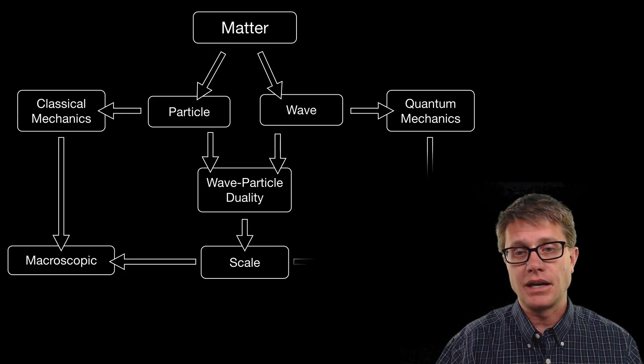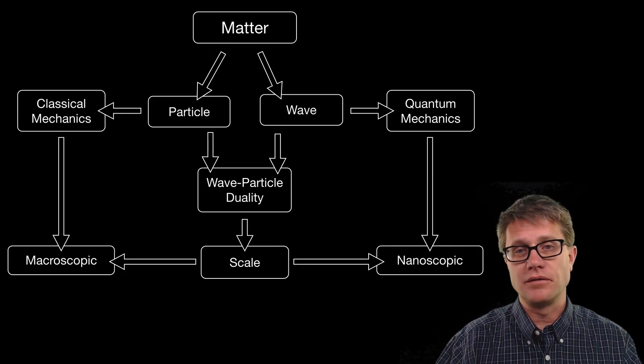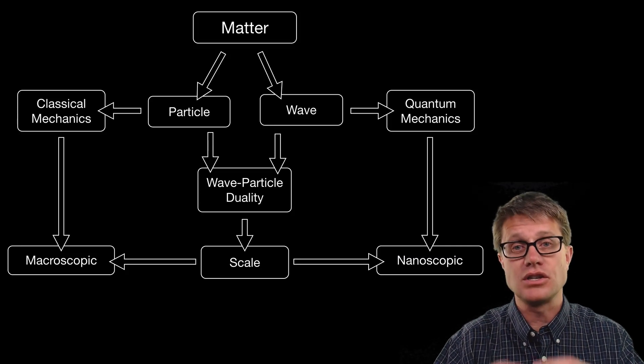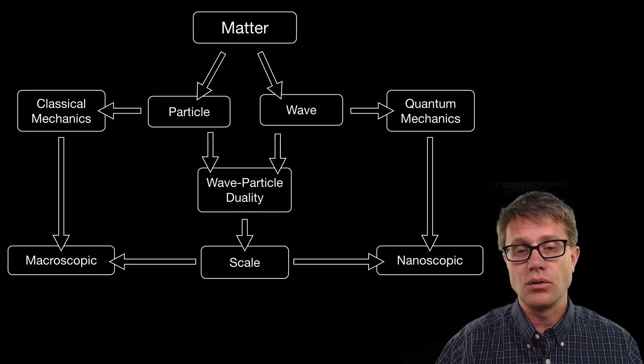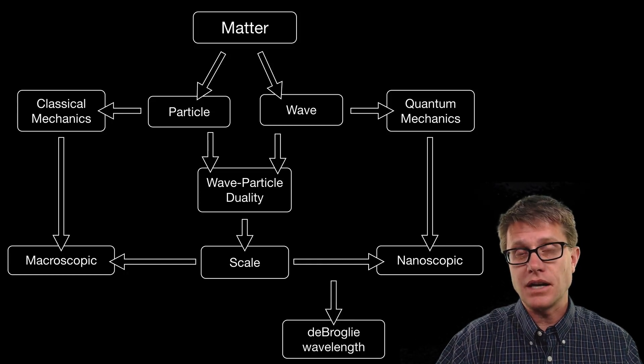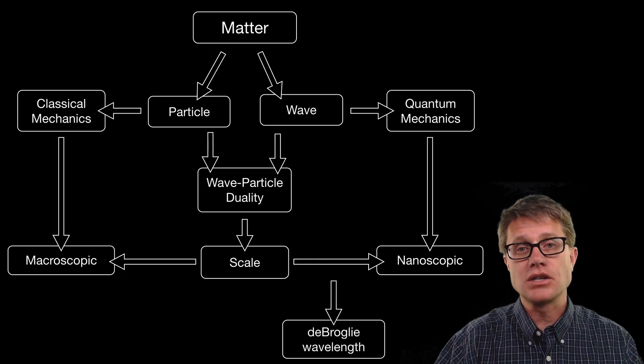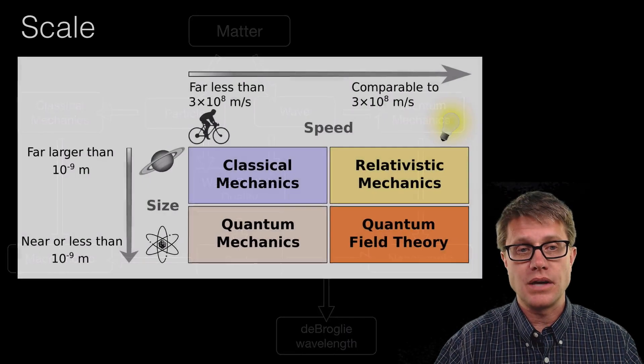But we have to move down to the level of nanoscopic, really, really small particles, then we deal with matter as a wave. And the de Broglie wavelength tells us how much wavelength effect that we are going to have.